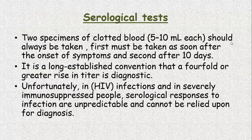Serological tests. Two specimens of clotted blood, 5 to 10 ml each, should always be taken. The first must be taken as soon as possible after the onset of symptoms and the second after 10 days. It is a long-established convention that a four-fold or greater rise in the titer is diagnostic. This is an ideal setting where you do two specimens and do the test in a quantitative manner — a four-fold rise suggests infection.